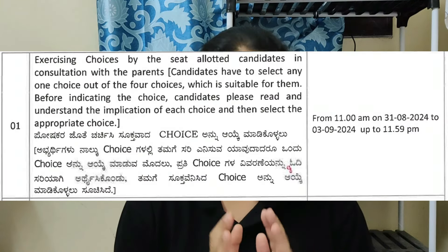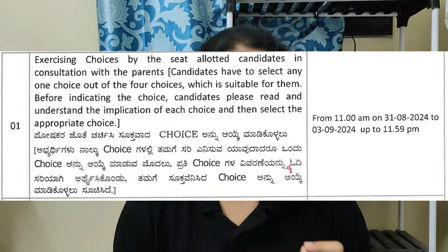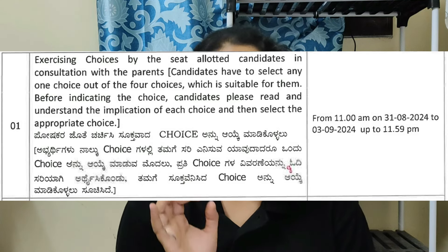Once the seat is allotted to you, you will have 4 choices — Choice 1, Choice 2, Choice 3, and Choice 4 — regarding which you need to take a decision. The dates for taking these decisions are from 11 a.m. 31st August 2024 till 3rd September 2024 up to 11:59 p.m. If you want to understand these choices and their implications, we have a detailed video in our channel. The link will be in the description section — go there, understand the choices, and then make your decision.